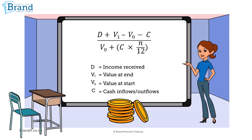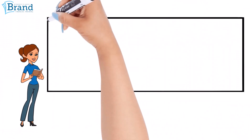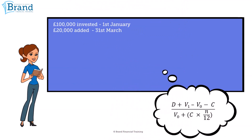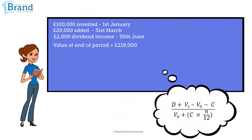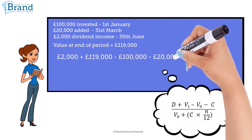If cash is withdrawn, the opposite is true — it is a negative figure that is added into the top line of our formula and deducted in the bottom line. Let's take a look at an example. Meg invested a hundred thousand pounds on the first of January, and a further twenty thousand pounds on the 31st of March. Her portfolio received two thousand pounds in dividend income on the 30th of June. The value of her portfolio on the 31st of December was a hundred and nineteen thousand pounds.